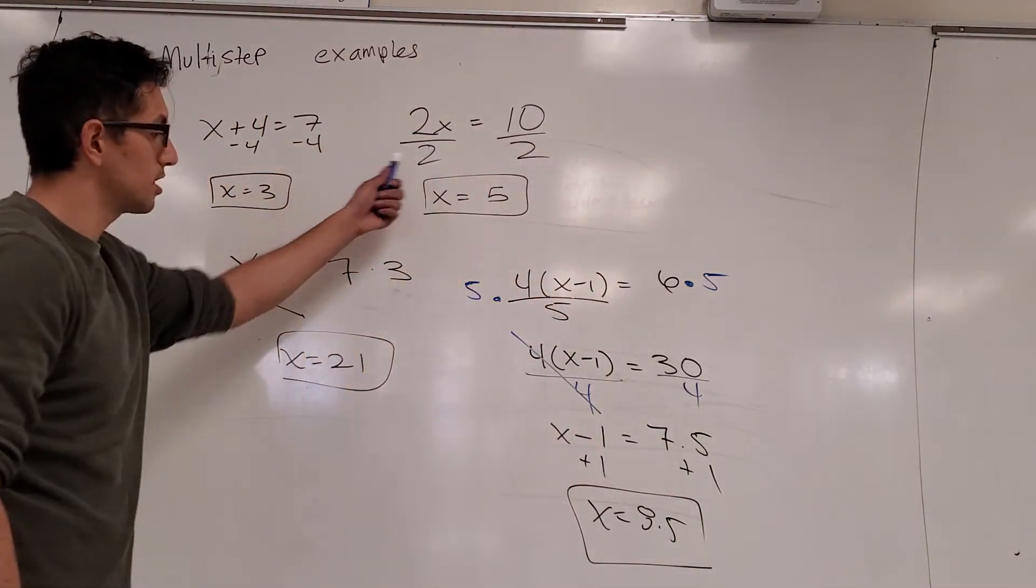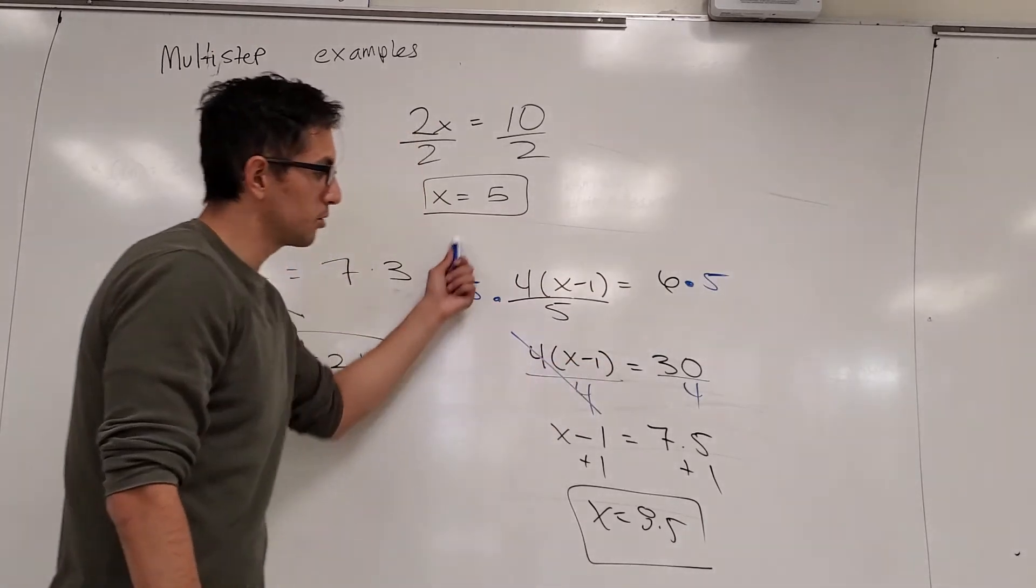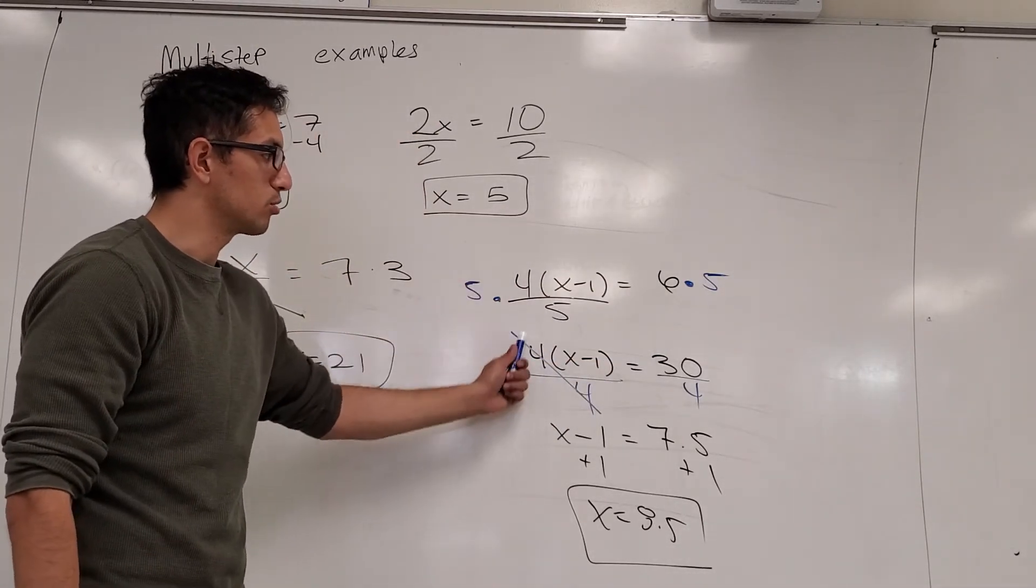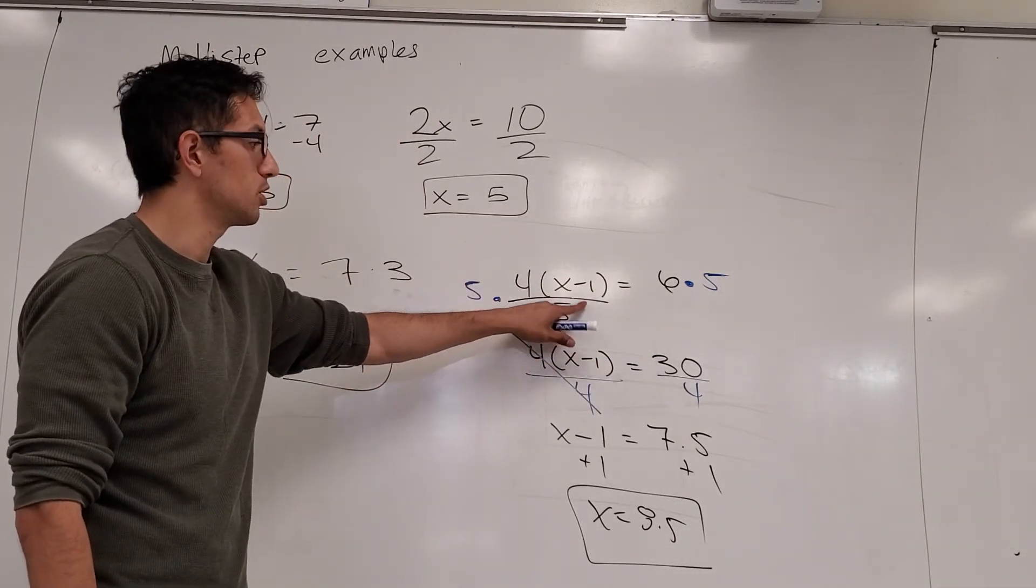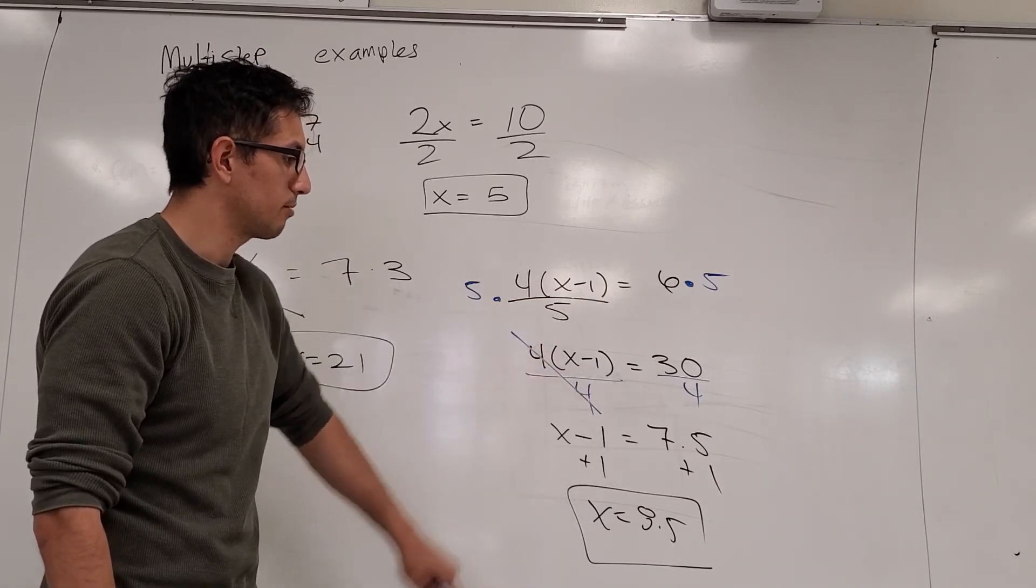So these are single step examples, and eventually you combine the ideas together to solve a multi-step example. You just have to decide which one goes first. Since division was a big operation here, I cancel that out first. Then I cancel out the multiplication by 4 by dividing by 4.